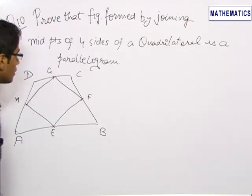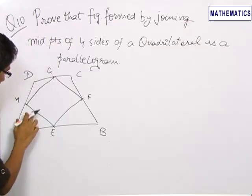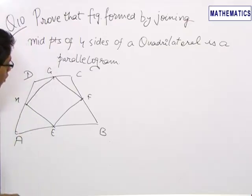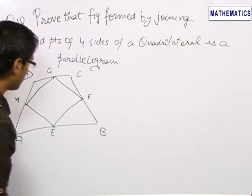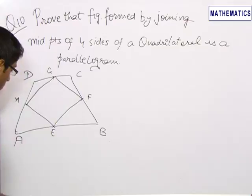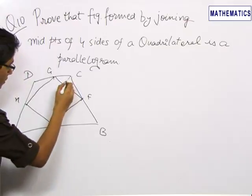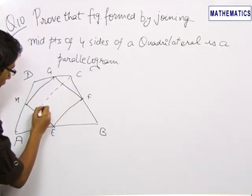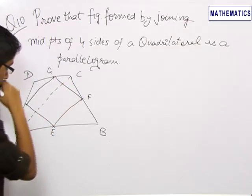Now this is an important question because it gives us practice of the different properties of a quadrilateral. We start by joining the diagonal AC.